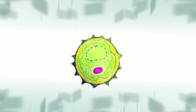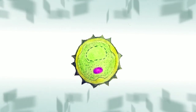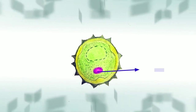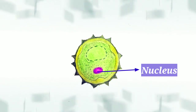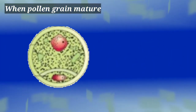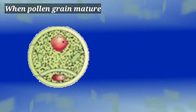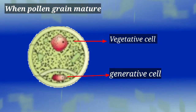The pollen grain consists of a centrally located nucleus and dense cytoplasm. The cytoplasm of the pollen grain is surrounded by a plasma membrane. When the pollen grain is mature, it contains two cells, namely the vegetative cell and generative cell.